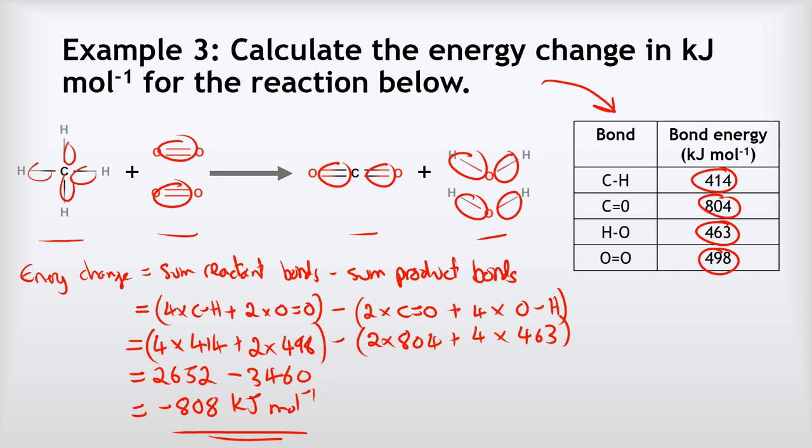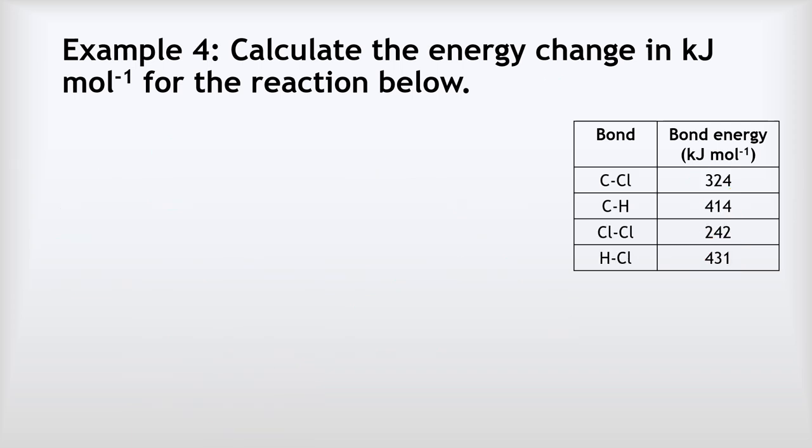On the previous example I mentioned cancelling to simplify the calculation, but because there are no bonds shared in common on both sides here, there is no cancelling you can do — you have to use the full long method.